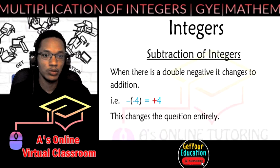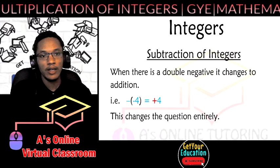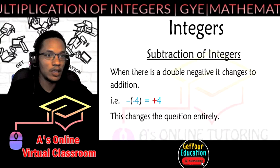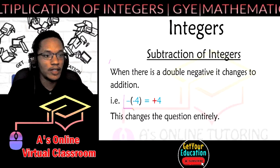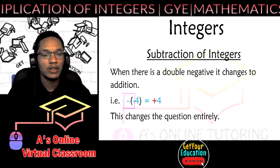The subtraction is just one major thing for me to point out. When there is a double negative it changes to addition. So what do I mean by that? As you could see here with the four, there is a negative in front of the brackets with no number in between and a negative four.